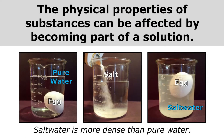The physical properties of substances can be affected by becoming part of a solution. You can see that the egg sinks in pure water, but when I dissolve salt and create salt water, the egg ends up floating. That's because salt water is more dense than pure water — the solution is more dense. The properties of the solution are different than the properties of just the pure water, so physical properties can be affected once we make solutions.